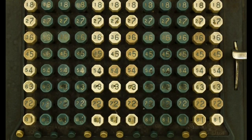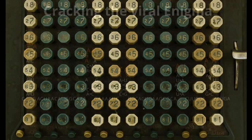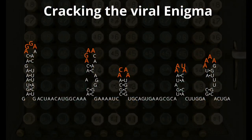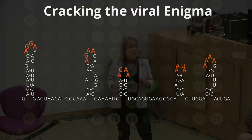This discovery has been likened by the press as the equivalent of cracking the viral enigma. The reason perhaps is that these signals are really very cryptic. This is due to the fact that there is a very strong variety in the structures, as you can see across those examples, and also in the sequences that are important for this recognition event.